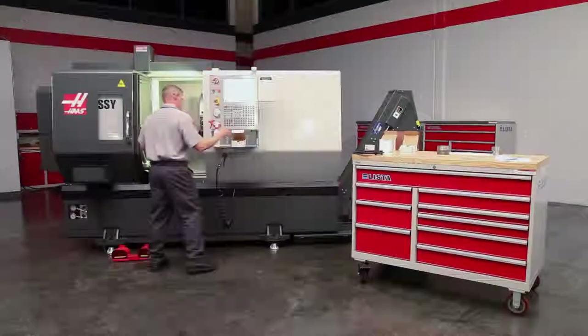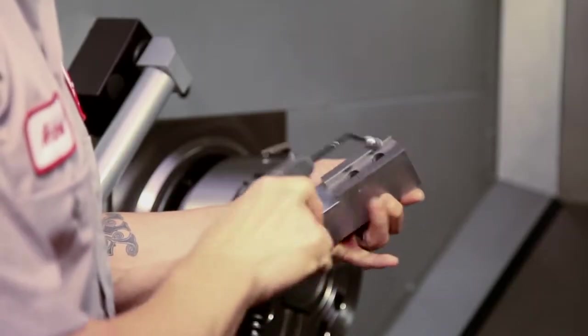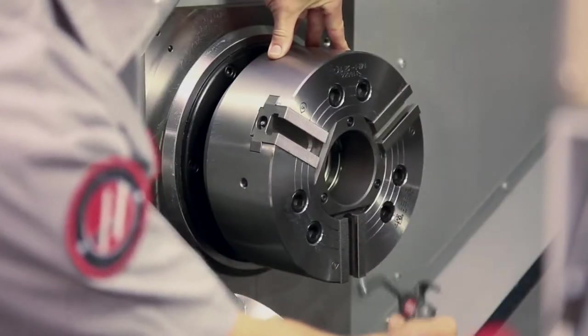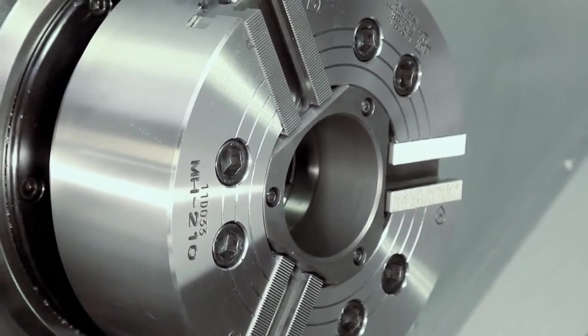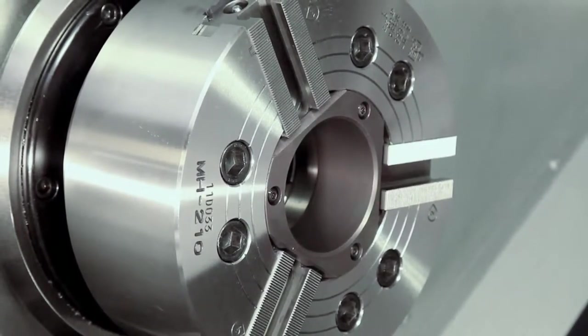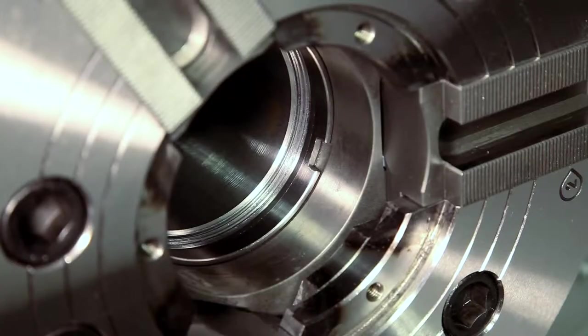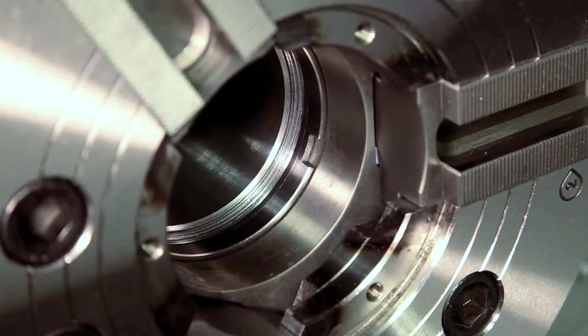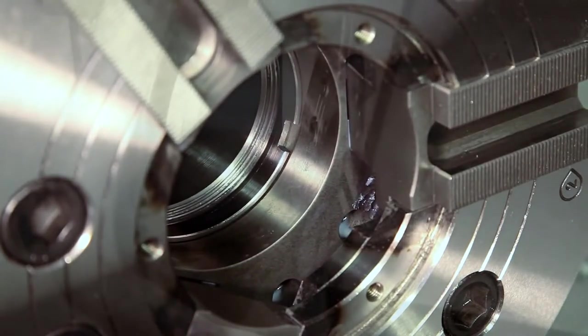Before we mount the jaws, it's a good idea to clean the serrated faces of the soft jaws and master jaws and the T-slots as well. While we are working at the chuck face, it is worth noting that you should never operate the chuck with the cover plate removed in an attempt to gain additional part clearance. This cover protects the internal moving parts from contamination. If contamination occurs, chuck life can be significantly reduced.